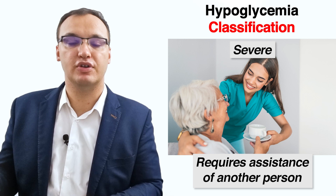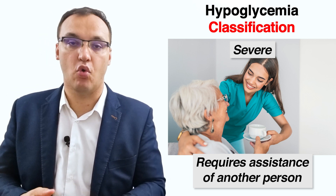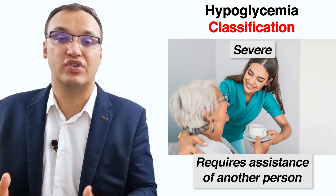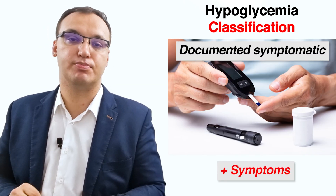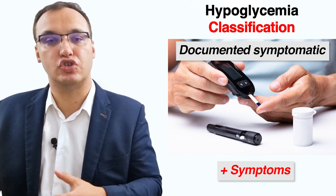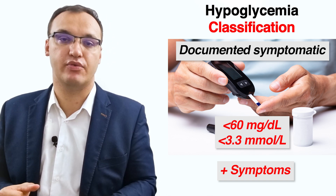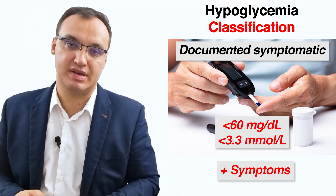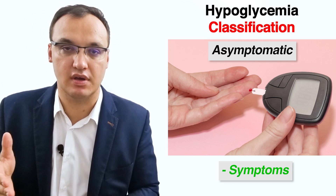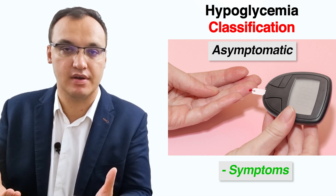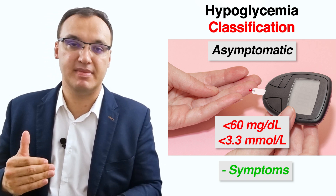Severe hypoglycemia is hypoglycemia that requires the assistance of another person to administer carbohydrates, glucagon, or other resuscitative action. Documented symptomatic hypoglycemia has the typical symptoms of hypoglycemia accompanied by a measured glucose level of less than 60 mg per deciliter or less than 3.3 mmol per liter. Asymptomatic hypoglycemia is hypoglycemia not accompanied by symptoms, but with a measured glucose level of less than 60 mg per deciliter or less than 3.3 mmol per liter.